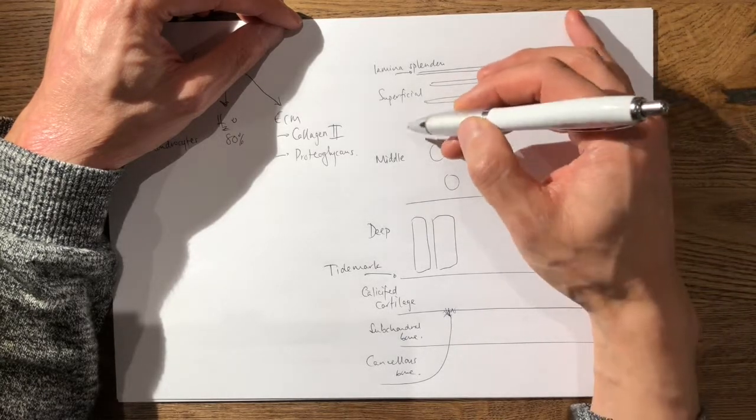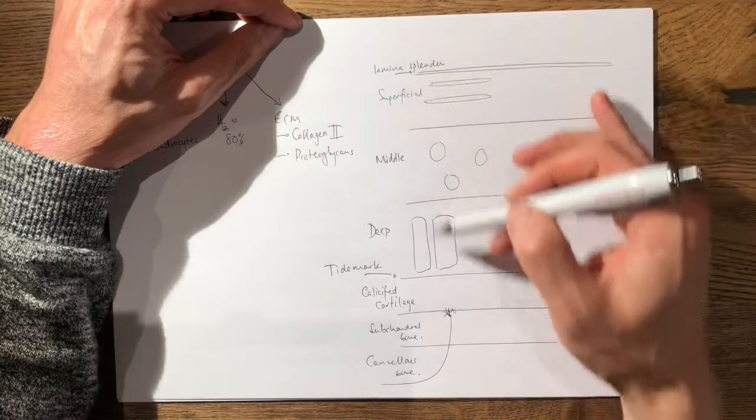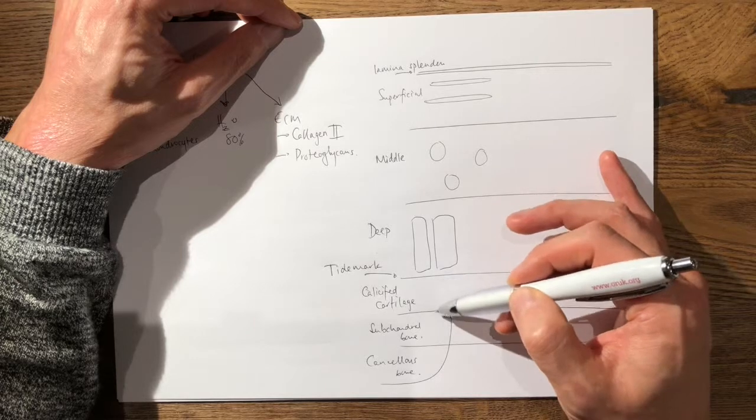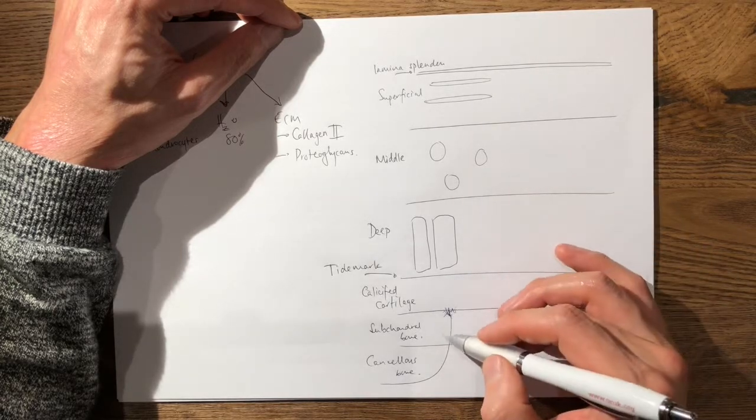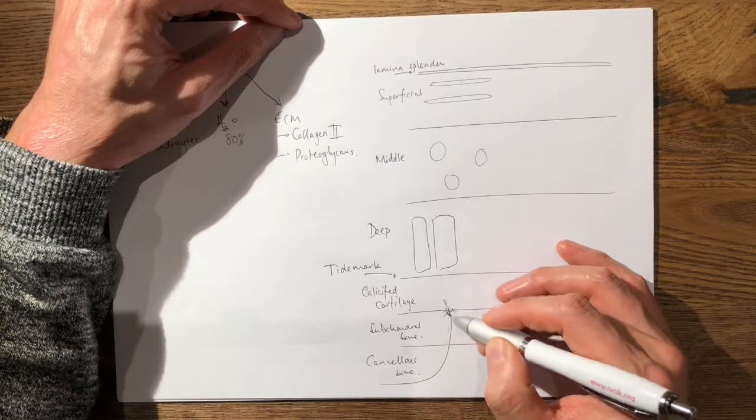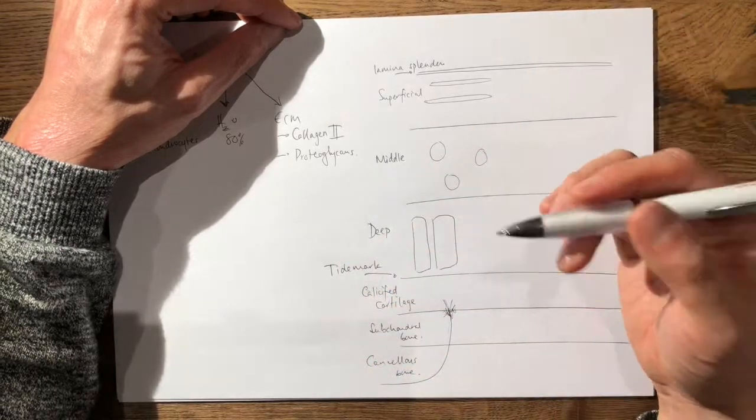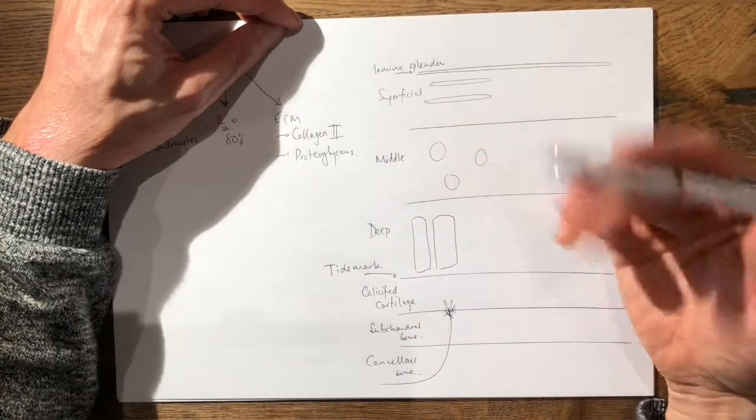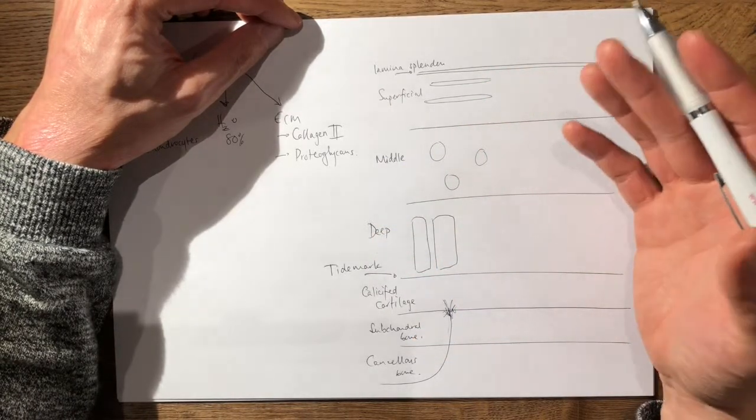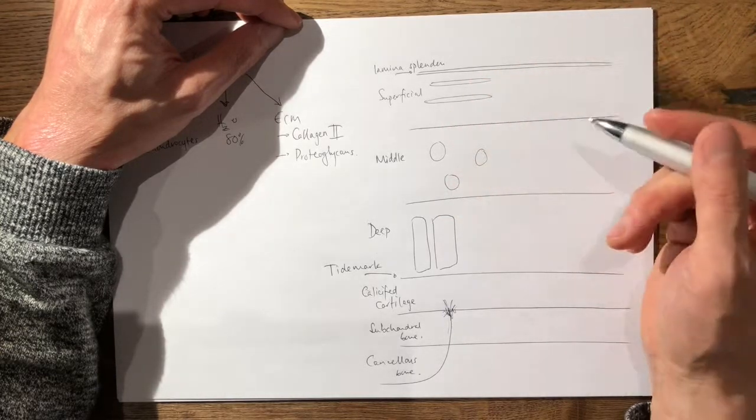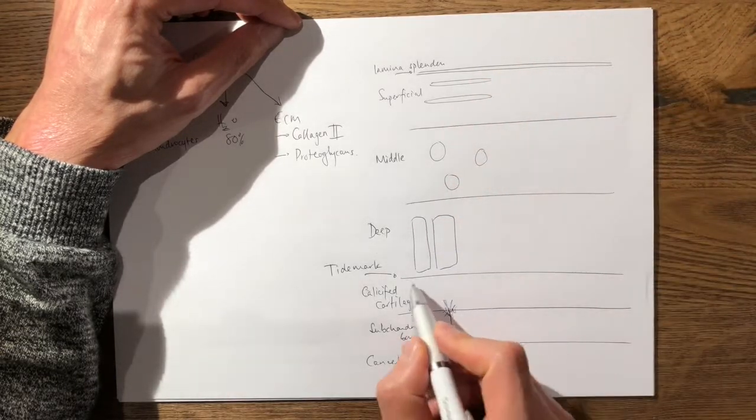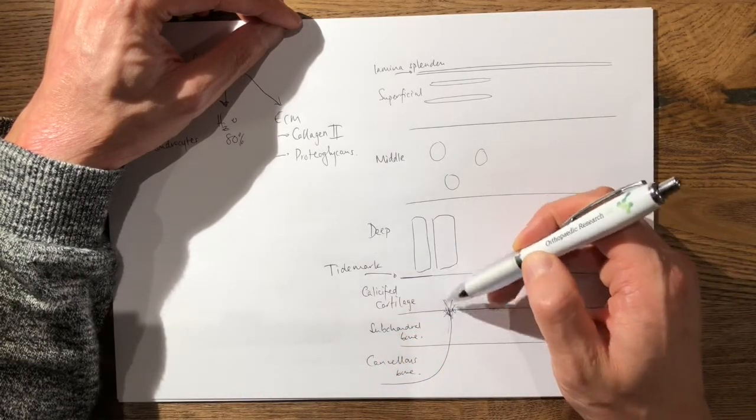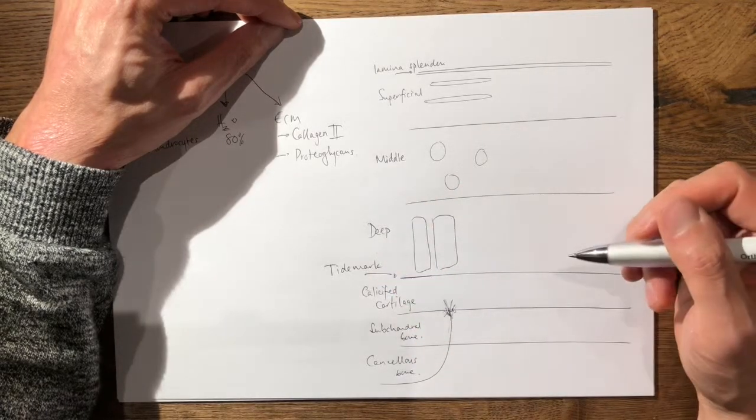However, if there is a deeper laceration to the cartilage which breaks through the tide mark and into the calcified cartilage and the subchondral bone, you will get infiltration of the blood vessels. And therefore, you will get development of a fibrocartilaginous scar or fibrocartilaginous plug. And therefore, the deeper lesions do tend to heal. And this is the principles behind microfracture, because in microfracture, you break through the tide mark to try to get the cartilage to heal.